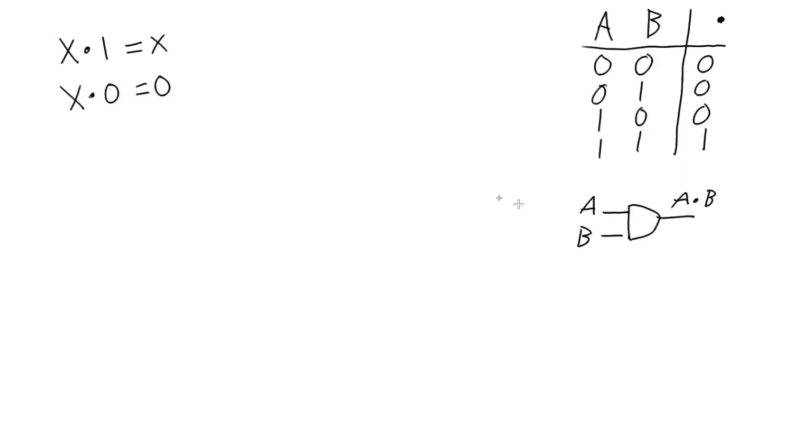And so if one of them is stuck at 0, it doesn't matter what this input is. The output is always going to be 0 because it doesn't have that other 1 to bring it up.